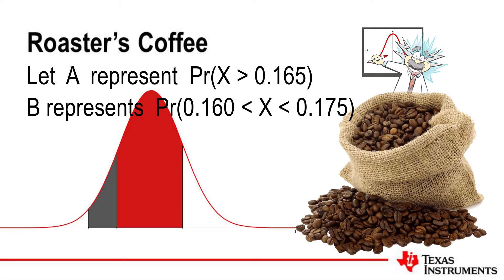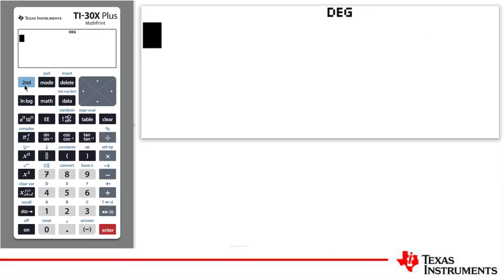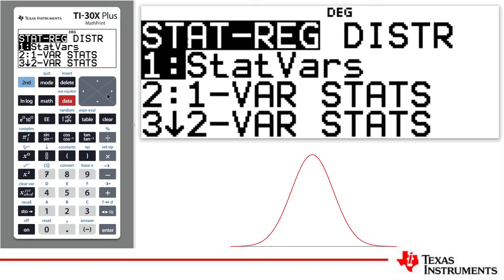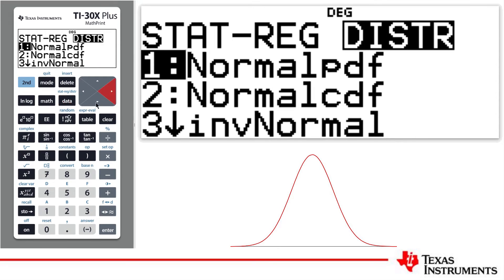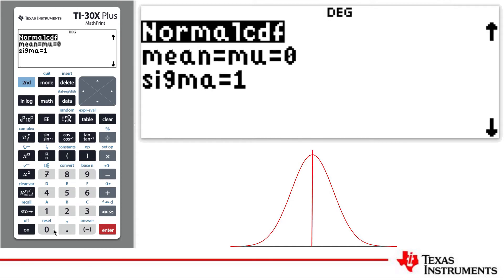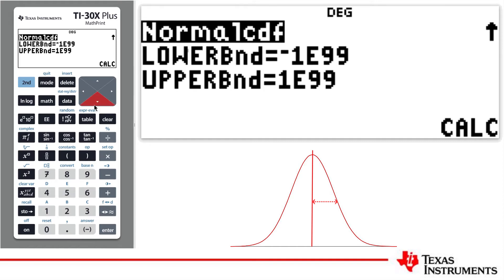We can use the TI-30X Plus MathPrint to find the probability of event B. We know the weights are normally distributed, so I will start with the Distributions menu and select Normal Cumulative Density Function. The mean is 0.17 and the standard deviation is 0.005. For event B, I need to find the probability associated with beans weighing between 0.16 and 0.175 grams.